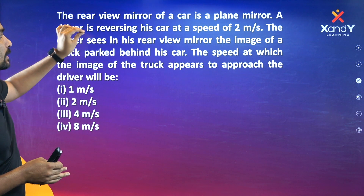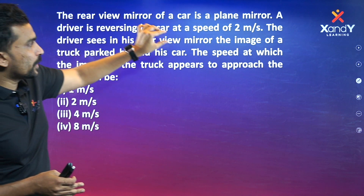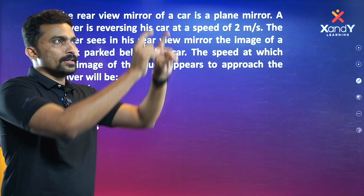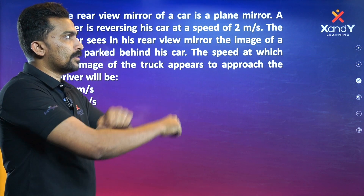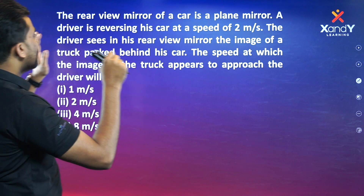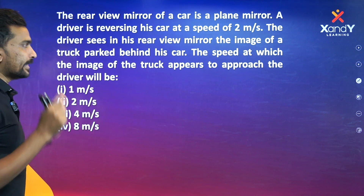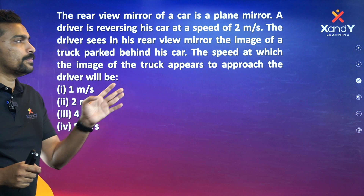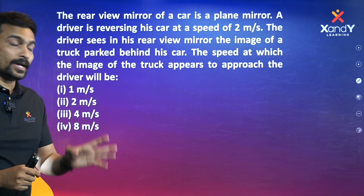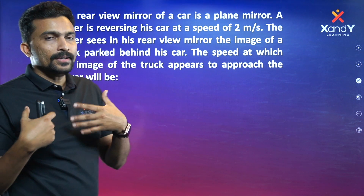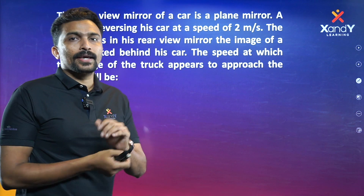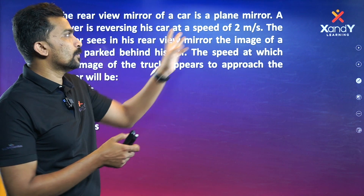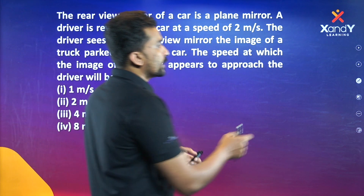A driver is reversing his car at a speed of 2 meters per second. The driver sees in his rear-view mirror the image of a truck parked behind the car. The rear-view mirror here is a plane mirror. That's our first question.